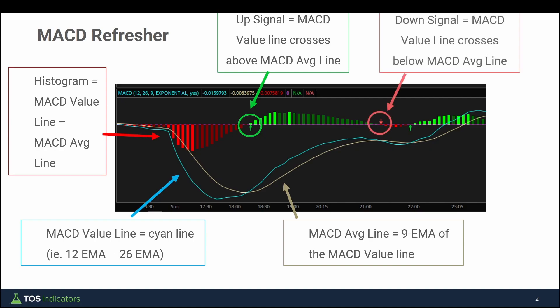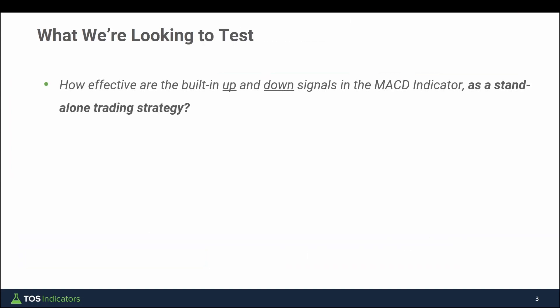This is an example of an up signal, and this is an example of a down signal. But what happens if you treat those as your sole trading indicators? Buy every time you see an up arrow, sell that buy position anytime you see a sell arrow, and then reverse that position on the same bar to play the opposite side. That's the goal of what we're looking to back test here — how effective is that as a standalone trading strategy?